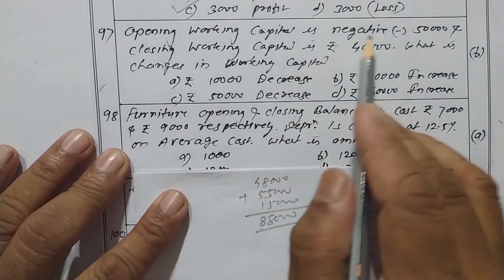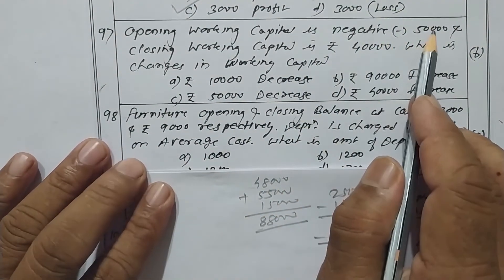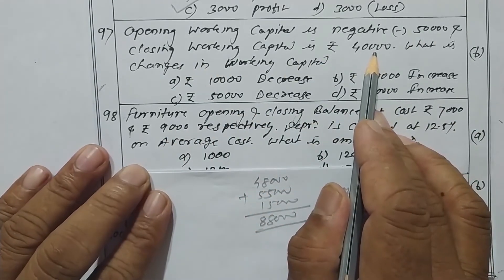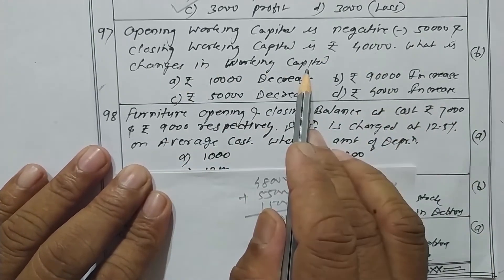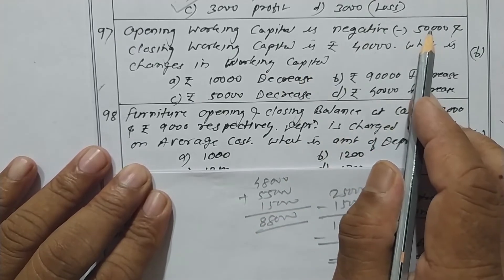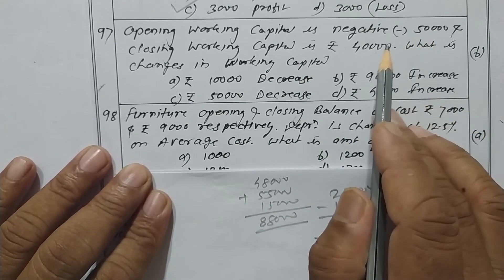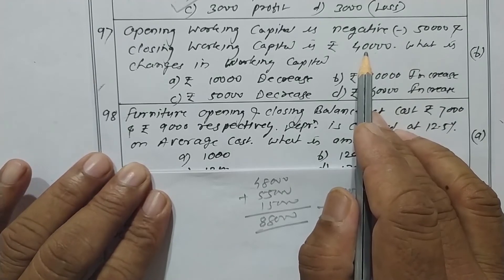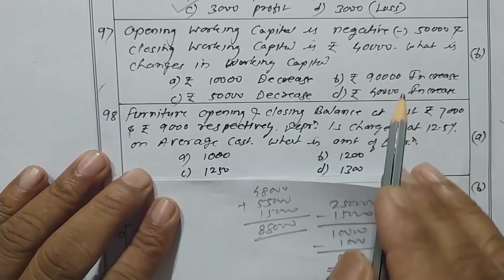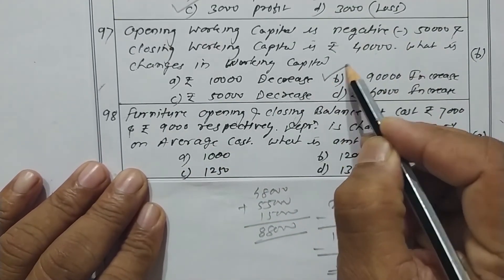Opening working capital is negative rupees 50,000 and closing working capital is rupees 40,000. Change in working capital: minus 50,000 and plus 40,000, using the signs gives increase of rupees 90,000 in working capital. Option B is the correct one.